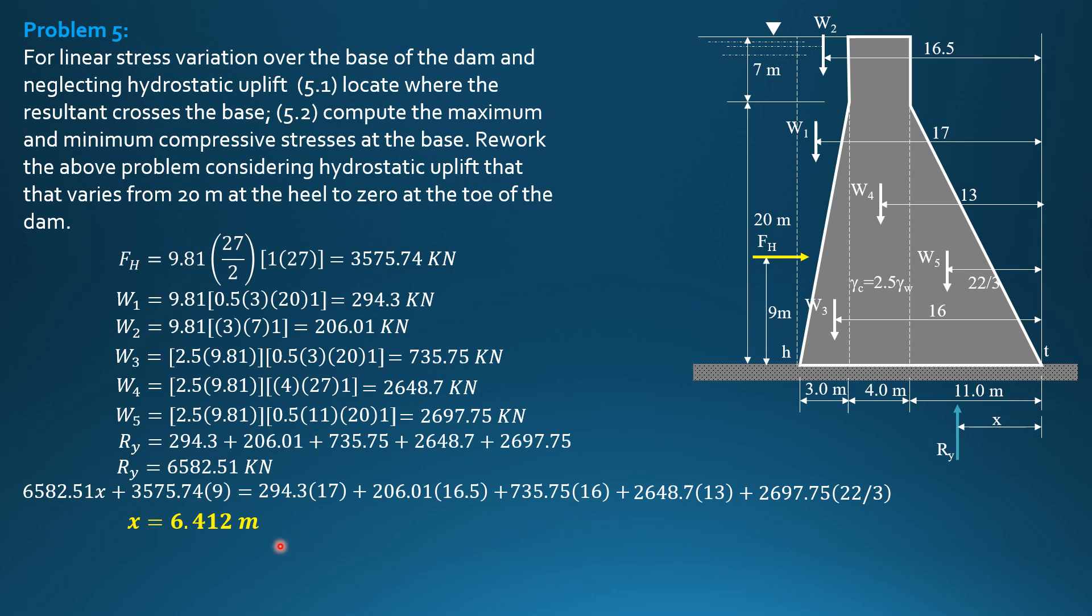And this is greater than 18 over 3 but less than 18 over 2. So 6.412, 18 over 3 is 6 less than 6.412, and 6.412 is less than 18 over 2 or 9. So it is within the middle thirds closer to the toe. So here, to the right of the center, then to the left of the extremity of the middle third. So this is good design.